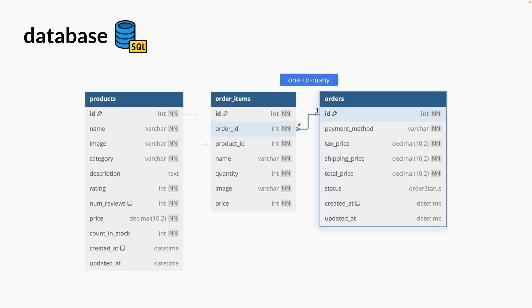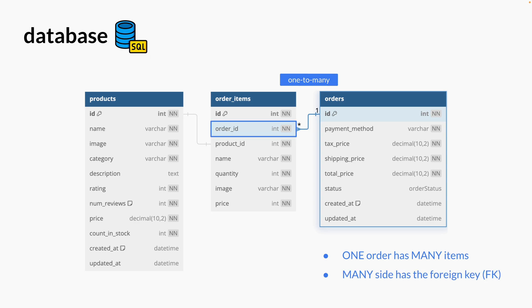We have a one-to-many relationship between an orders table and an order items table. In case you're not too familiar with one-to-many relationships between tables, you can think of this as one order having many items. The many side, which is our order items table, has the foreign key — the order ID foreign key — that references the ID of the order.